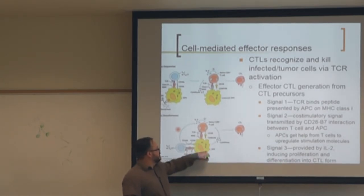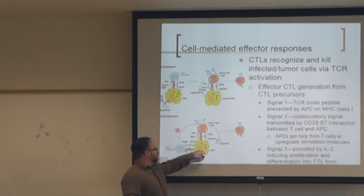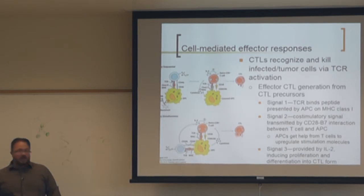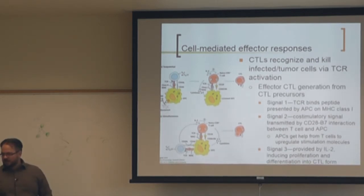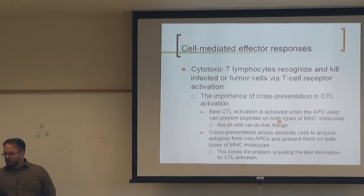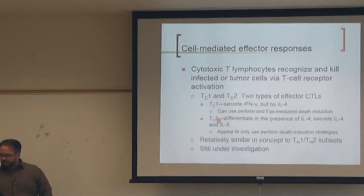CD4 cells signal through the dendritic cell, causing exogenous antigens to be shuttled through the proteasome into the rough ER, loaded onto MHC class I, and presented to cytotoxic T cells. Those CTLs become activated and traffic throughout the body looking for their target. The best CTL activation is achieved when APCs can present peptides via both MHC class I and class II, which only dendritic cells can do through cross-presentation.